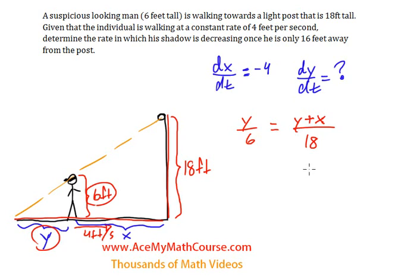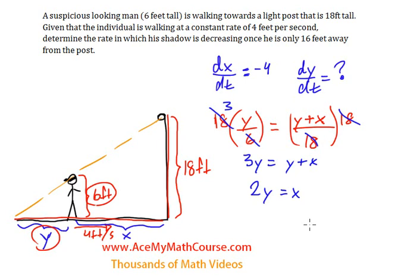I'll multiply both sides by 18 first. These will cancel out, so I get 3y. So 3y equals y plus x. I can bring over the y, so I get 2y equals x. Look at that. Now I can derive.